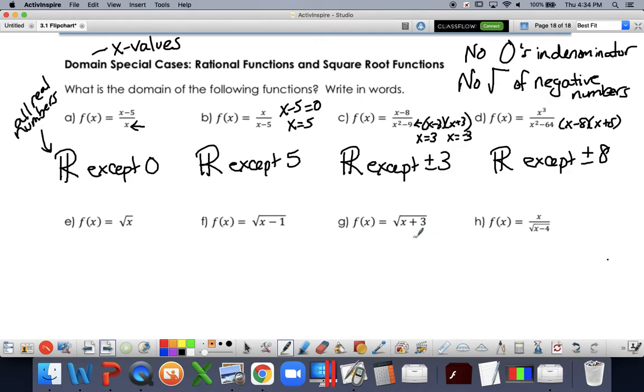In e through h, I'm focusing on making sure I do not have any negative numbers. So you can use inequality signs, mainly greater than or greater than or equal to. In this case, x can be anything as long as it is greater than or equal to 0.